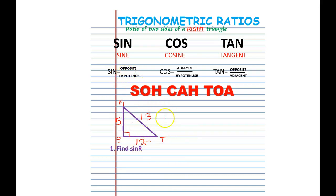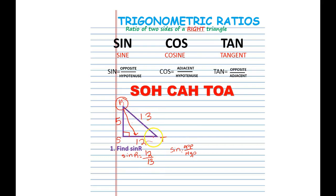So if you look, sine is opposite over hypotenuse. The sine of R: the opposite from angle R is 12, and the hypotenuse of this triangle is 13. So the sine of angle R is 12 over 13. The hypotenuse of a triangle will always be the hypotenuse — it will never be an opposite or an adjacent side.